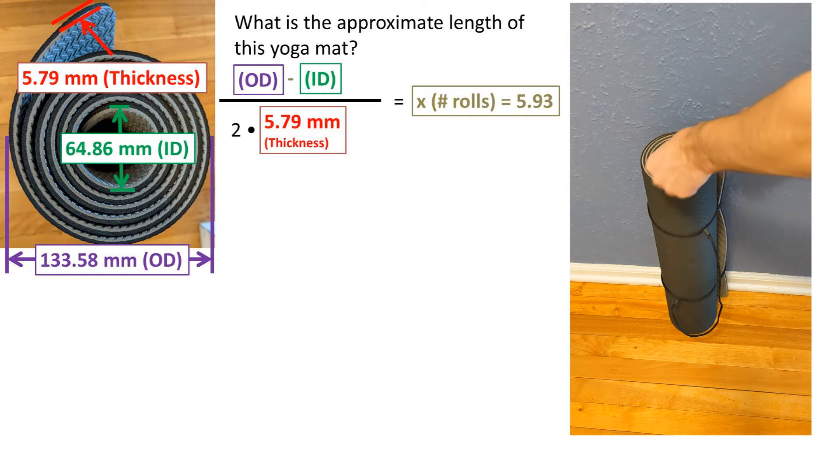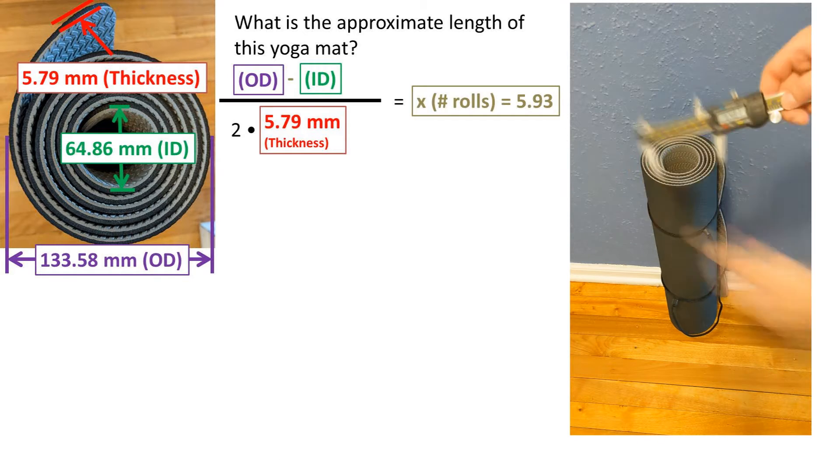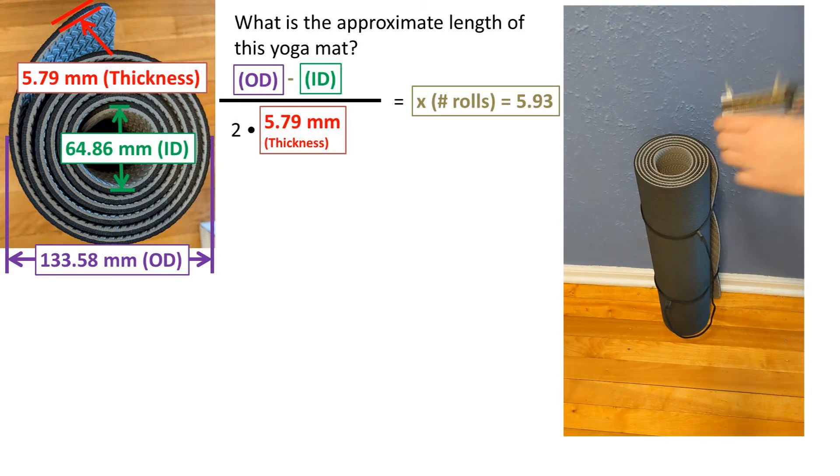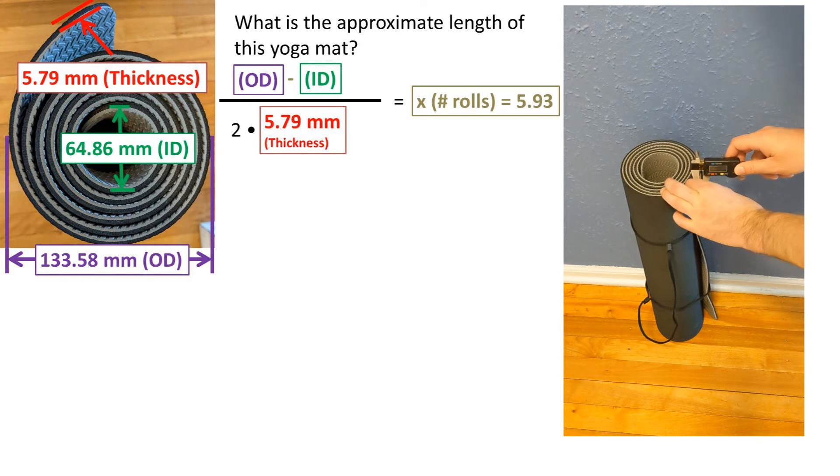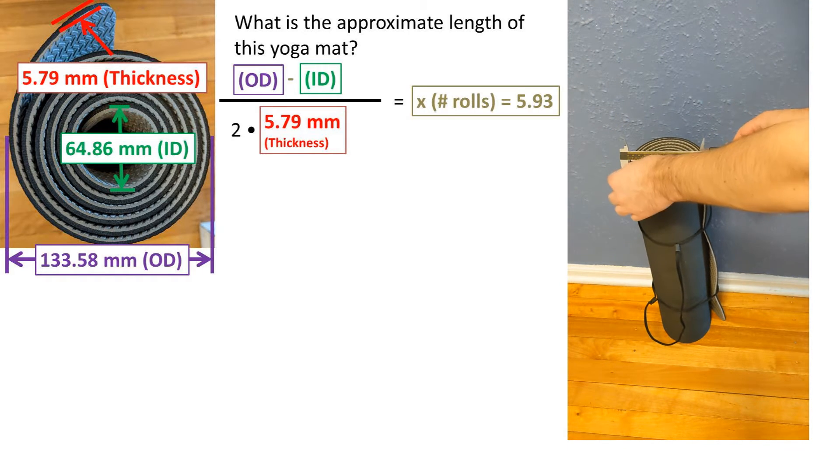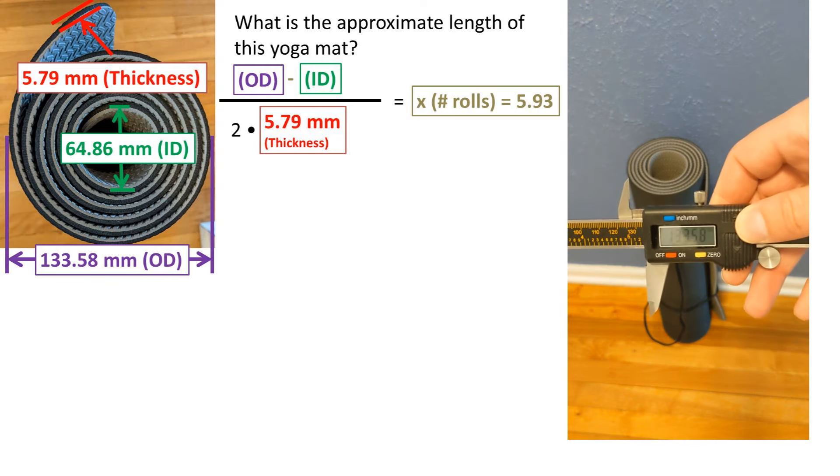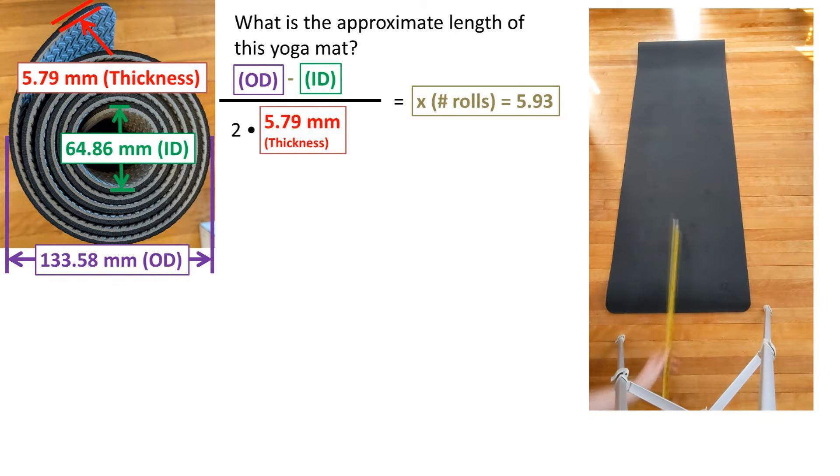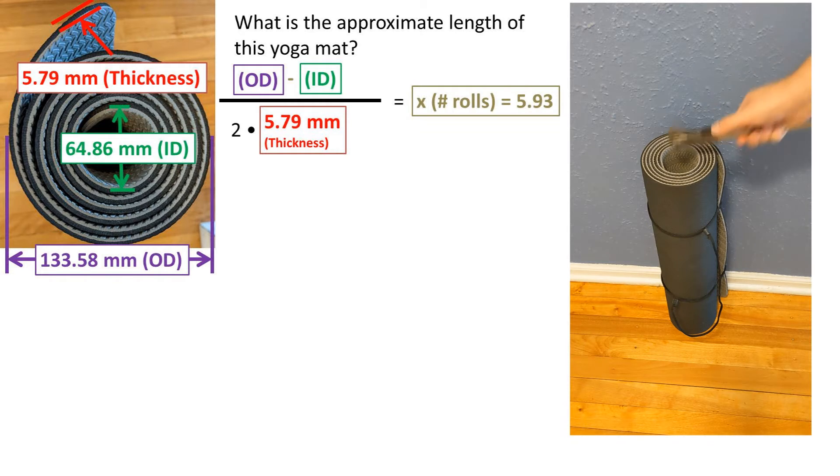To start we need the number of rolls. To do so we can take the outside diameter minus the inside diameter over two times the thickness. We do two times the thickness because for every roll layer we increase the diameter by two thicknesses, one on either side of the diameter.